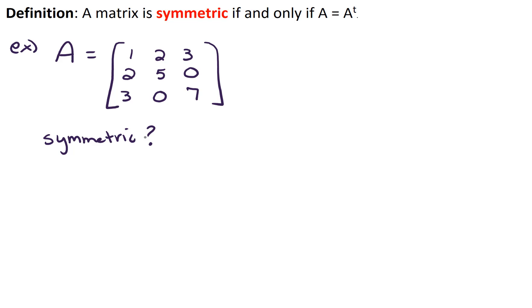So let's find A transpose. If we compute A transpose, we find that our first column is 1, 2, 3. Second column, 2, 5, 0. And the third column is 3, 0, 7. And so now the question is, does A equal A transpose? And the answer is yes, A equals A transpose. And so we say that A is symmetric.